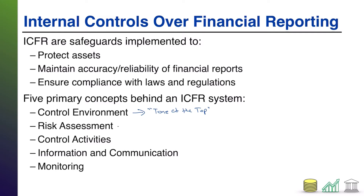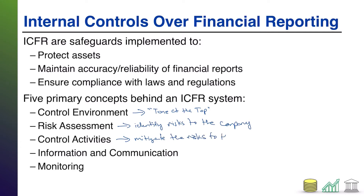Next up, risk assessment. The risk assessment is something that you do periodically, and basically this is how you identify the risks to the company — how will our cash get stolen? How will our inventory get stolen or damaged? How will our buildings get damaged? How will our investments lose value? You assess it periodically to say: what are the dangers we face? Where could we be sued? Where could we lose value? And then you start coming up with a plan to fix that. The fixes are what's known as the control activities, which mitigate the risks to the company.